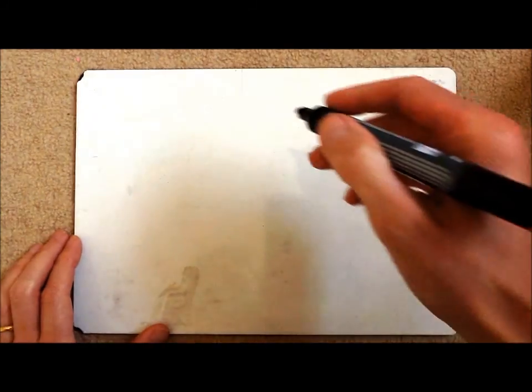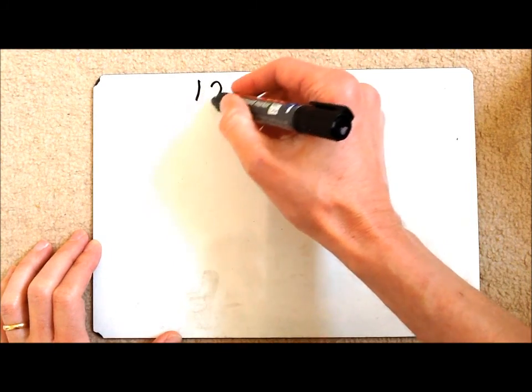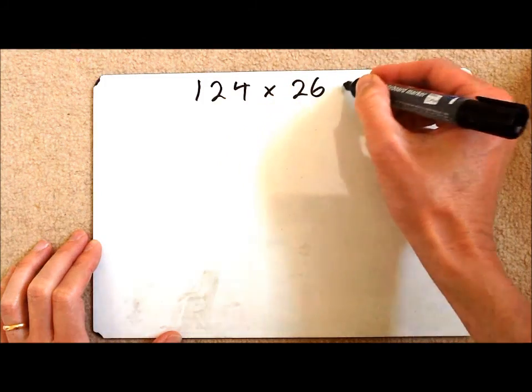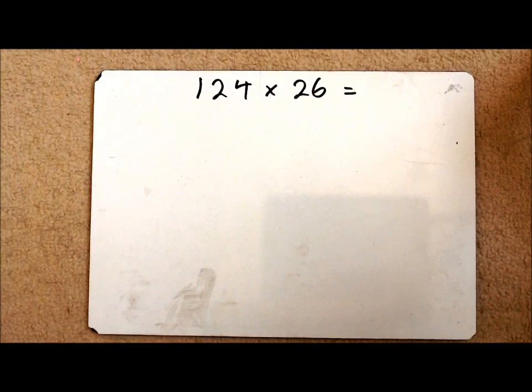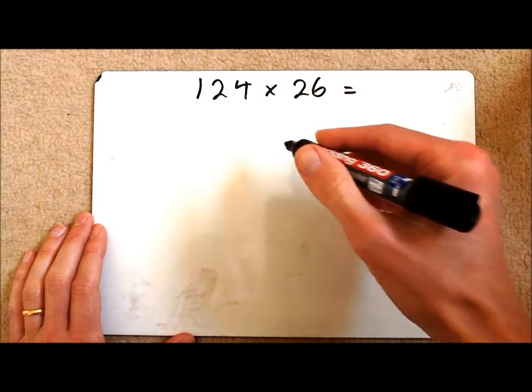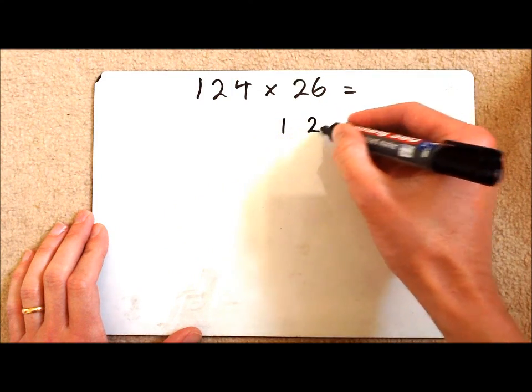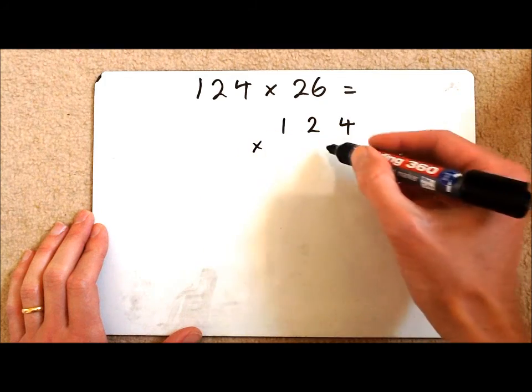So for example, if I wanted to find out the answer to 124 multiplied by 26, I then need to lay it out using my place value knowledge into 124 multiplied by 26.